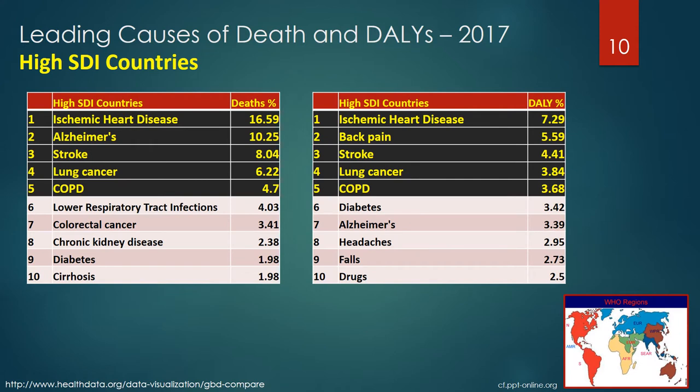The five leading global causes of death in high SDI countries are ischemic heart disease, Alzheimer's disease, stroke, lung cancer, and COPD. The five leading health impacts via DALYs are ischemic heart disease, back pain, stroke, lung cancer, and COPD. Back pain replaced Alzheimer's on the five leading causes on the DALYs table.